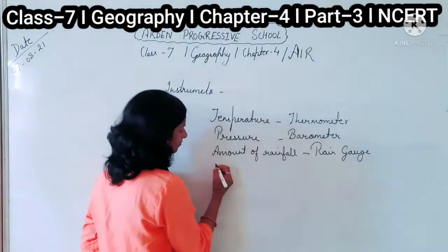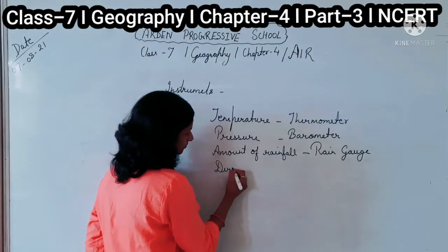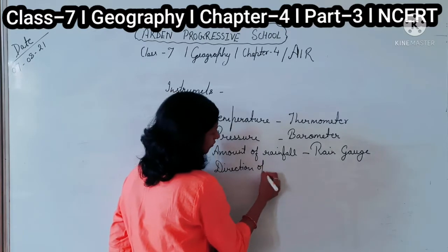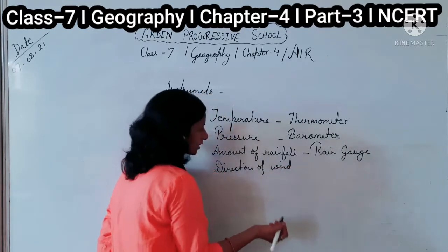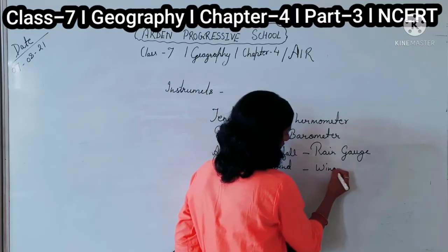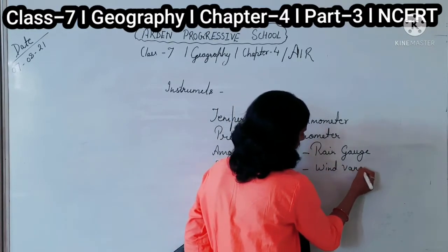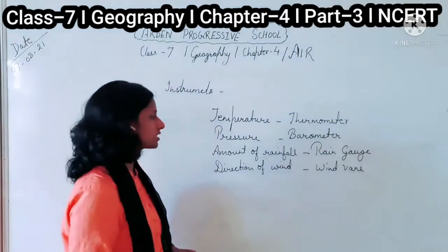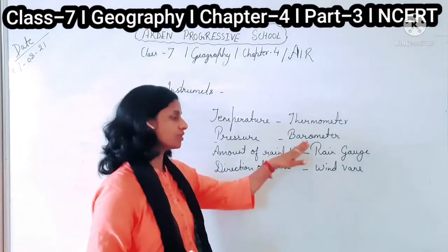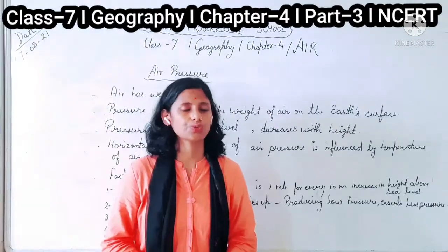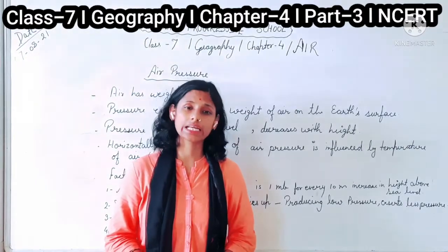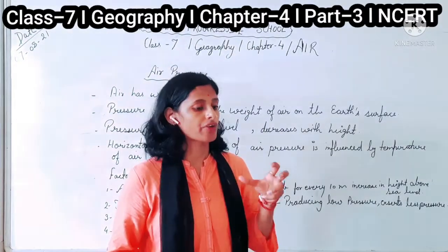The last one is direction of wind, which can be measured by the weather vane. Now let's discuss air pressure, which can be measured by the barometer, and let us connect it with weather and climate.